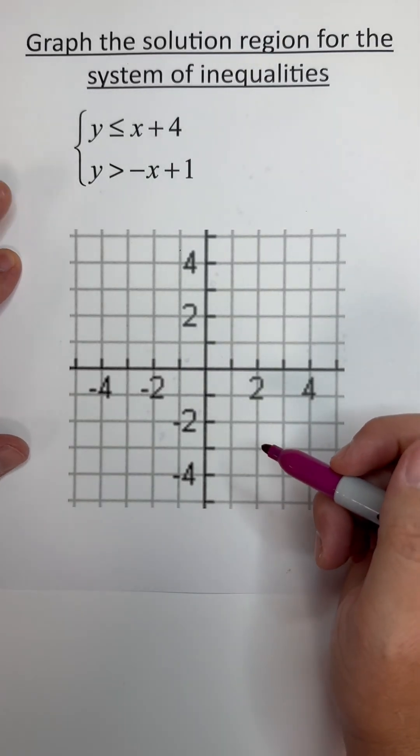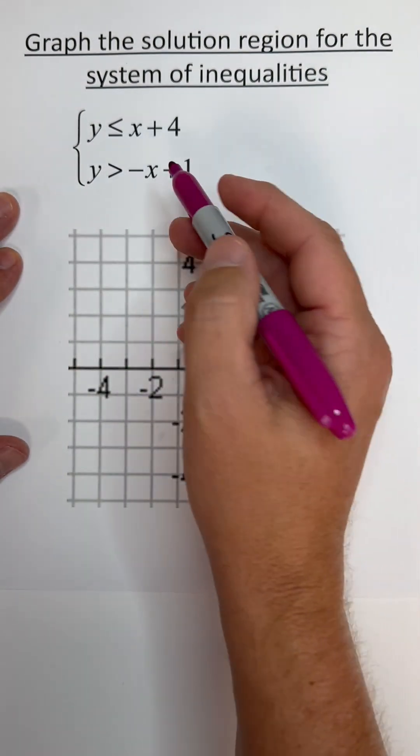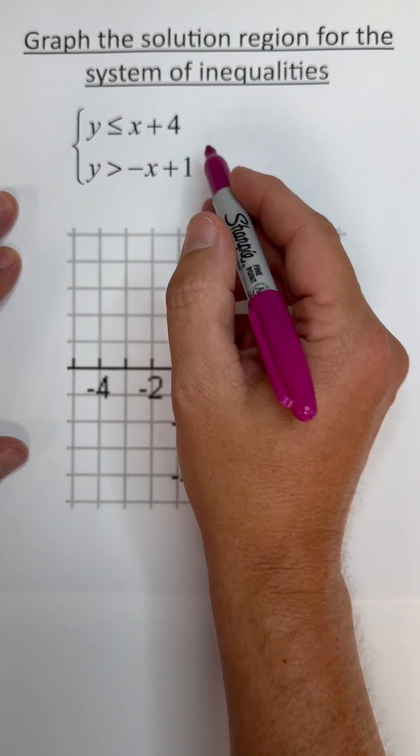Here we're going to graph a solution region for a system of linear inequalities. Both of these are in slope-intercept form, so I'm just going to start with the top one here.